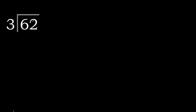62 divided by 3. 6 is not less — therefore 3 multiplied by which number is nearest to 6 but not greater. 3 multiplied by 3 is 9, 9 is greater. 3 multiplied by 2 is 6. 6 is not greater.